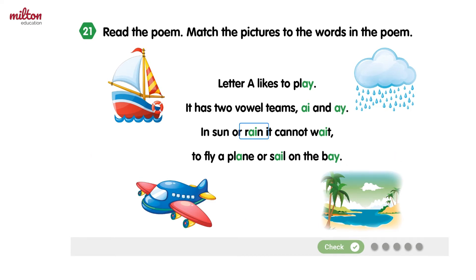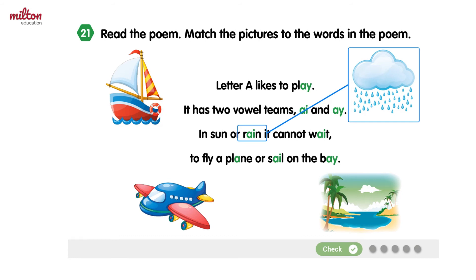This is the word 'rain.' We need to match it to one of these pictures. Which picture could it be? Here it is — this is a cloud with rain, and we've matched it to the word rain. Now that you've seen an example, do the other three pictures and match them to the correct word. Good luck and goodbye!